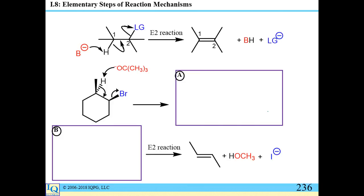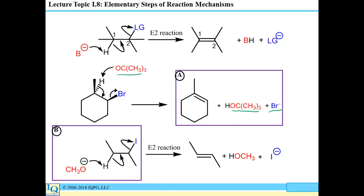The E2 reaction is concerted, so all three pairs of electrons are moving at the same time and there's no chance for rearrangement. The proton removed and the leaving group must be in an anti-periplanar arrangement. The E2 reaction can form a disubstituted alkene; remember that you're always trying to make the more stable alkene — that's the Zaitsev rule — so you would make the indicated trans alkene rather than the cis or monosubstituted alkenes that are also possible E2 products of this substrate.